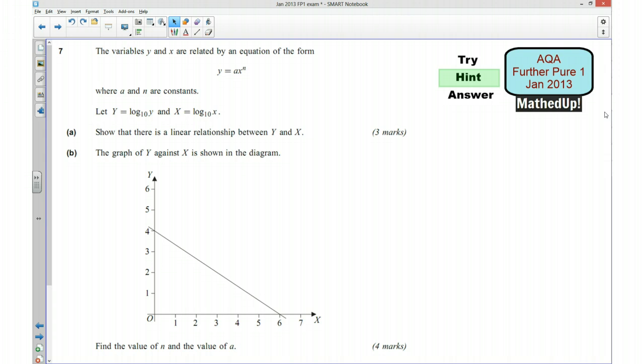Well done if you've managed to have a go at the question. I'm now going to go over a hint as to how you can go about answering the question. The variables Y and X are related by an equation of this form here, where A and N are constants. We let capital Y equal log₁₀Y and capital X equal log₁₀X. We need to show that there is a linear relationship between capital Y and capital X.